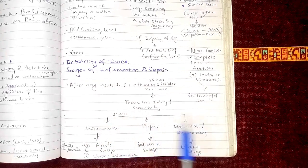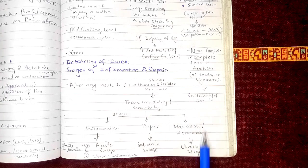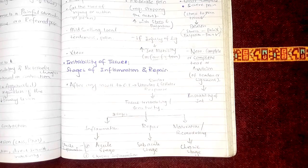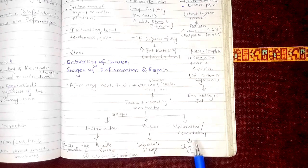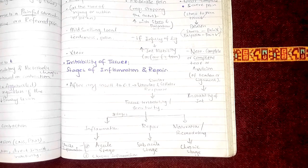In chronic inflammation, we can also observe these stages, but it would be possible only if the stimulus that was causing the chronic inflammation has ceased.